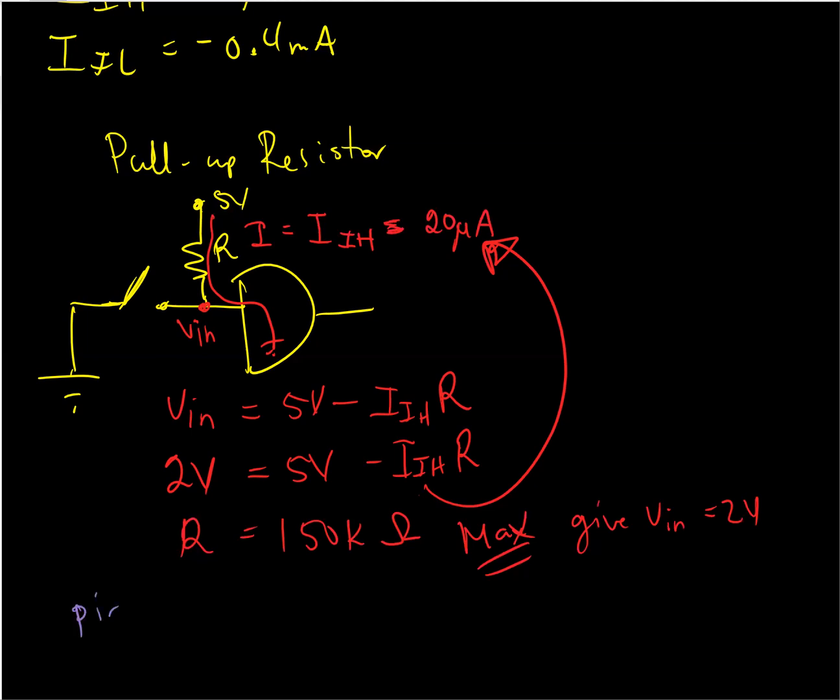I'm going to pick R equal to 10 kiloohms. If I calculate Vin, it's going to be five volts minus 20 microamps times 10 kiloohms, which is 4.8 volts, and that is definitely okay. That's considered a high voltage. So we've added this pull-up resistor to keep from having a floating input when this switch is open and to keep from shorting the power supply when the switch is ground. We've sized it such that when the switch is open, we still have a high enough voltage at that Vin to be considered high.